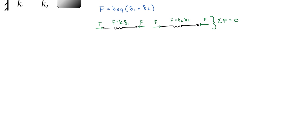Okay, so what we can do with that is say that K1 times delta 1 is equal to K2 delta 2. So delta 1 can be rewritten as K2 over K1 delta 2.